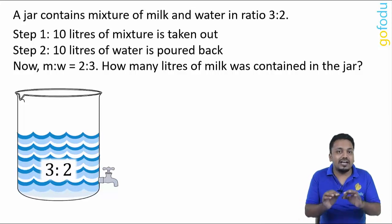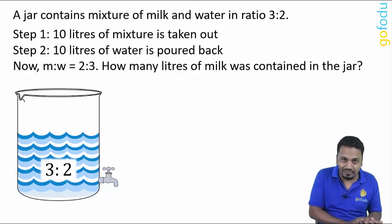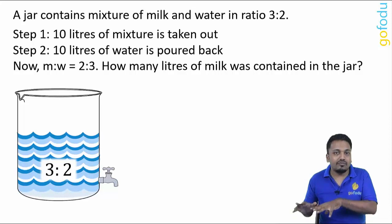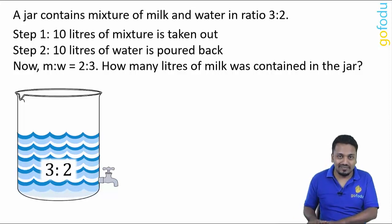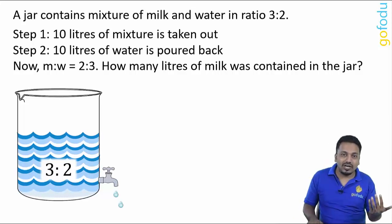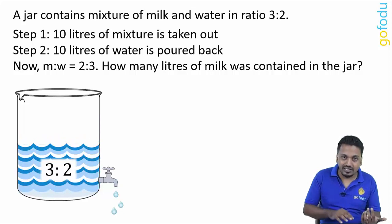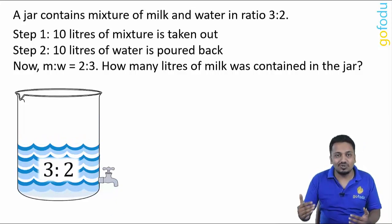Even the 10 liters we took out will have milk and water in ratio 3:2 only. Even if we take out 10 more liters of mixture the ratio will still be 3:2 only.